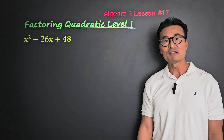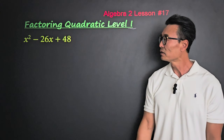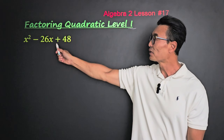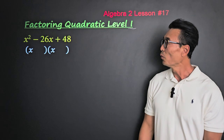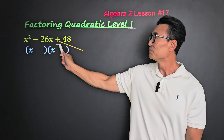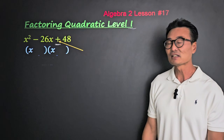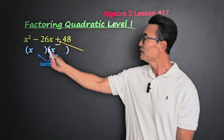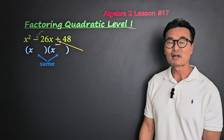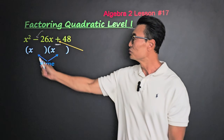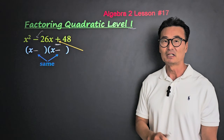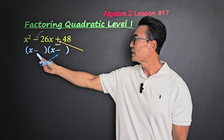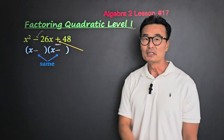Level one is the basic or easiest level, where the coefficient of x squared is going to be positive one and also the sign in front of c will be positive. When we have a positive value for c, then the signs will be the same — either both positive or both negative. Since we have a negative value for b, it's going to be negative and negative.